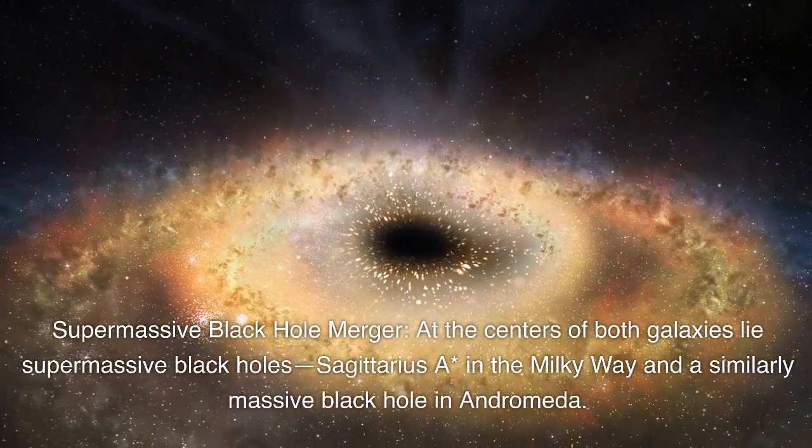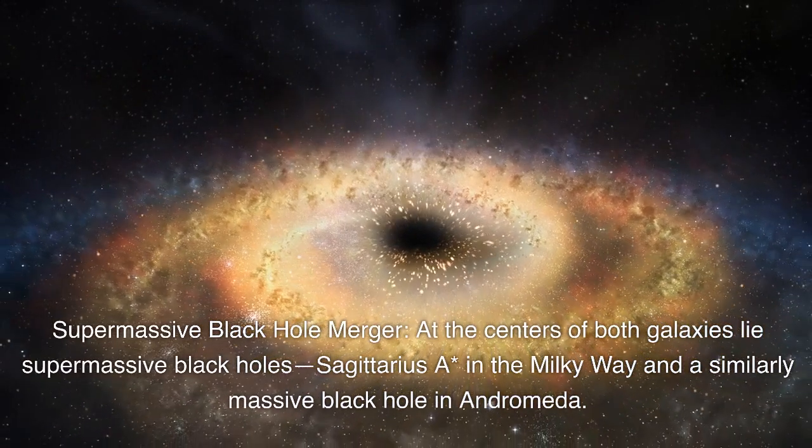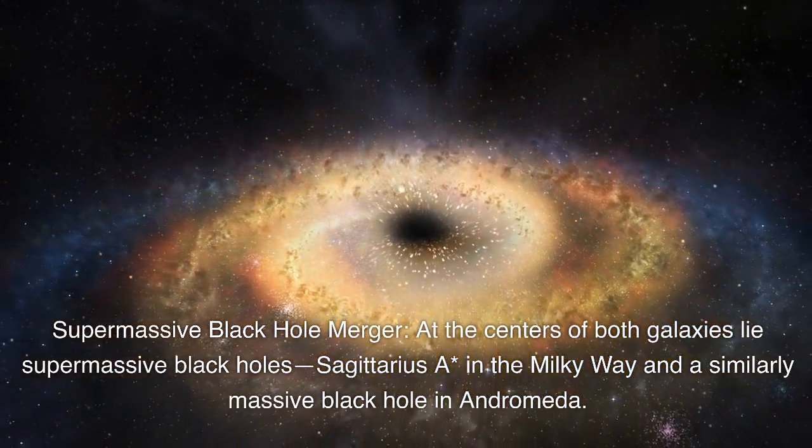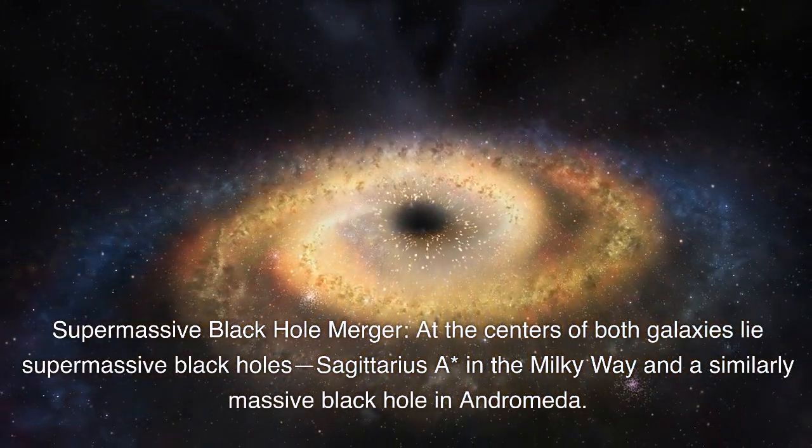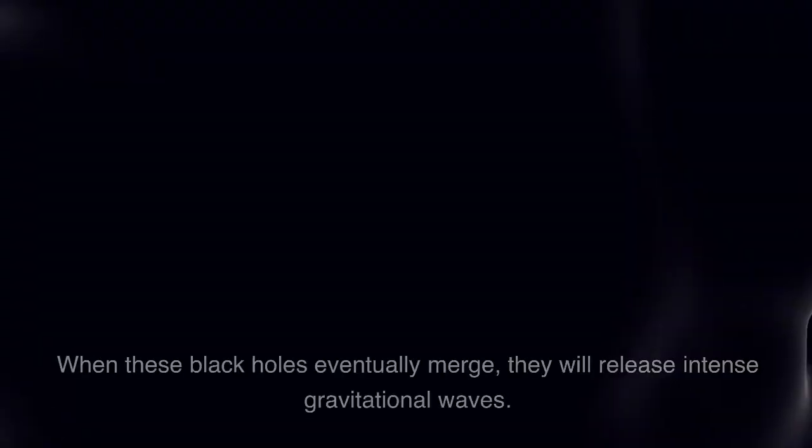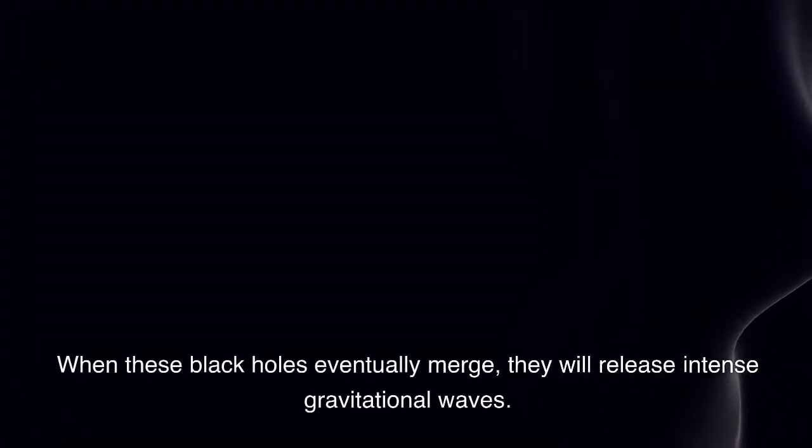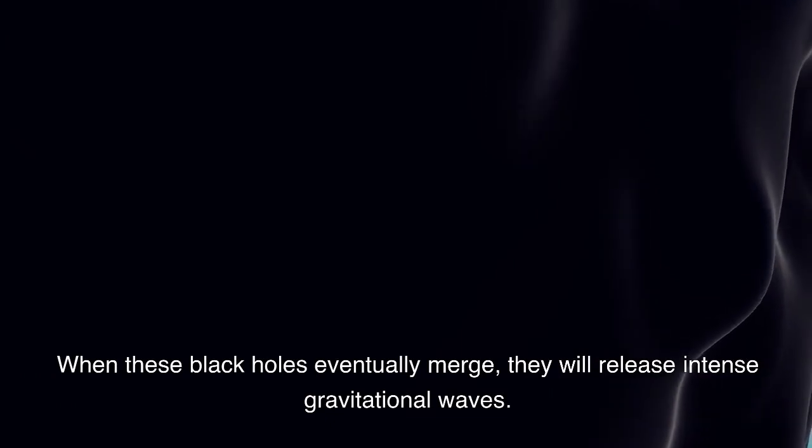Supermassive black hole merger. At the centers of both galaxies lie supermassive black holes: Sagittarius A in the Milky Way and a similarly massive black hole in Andromeda. When these black holes eventually merge, they will release intense gravitational waves.